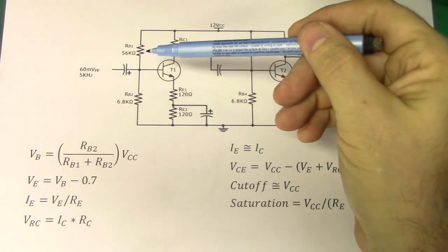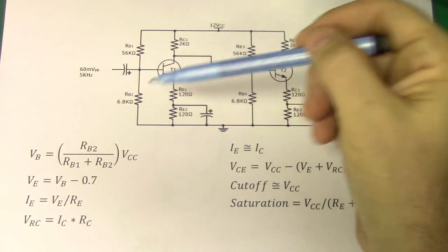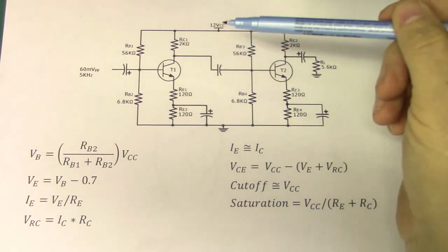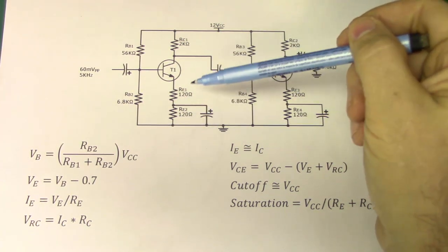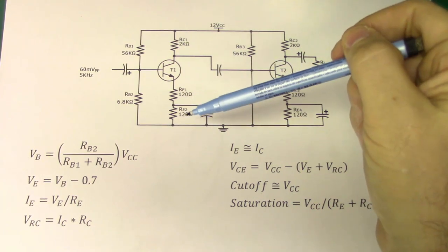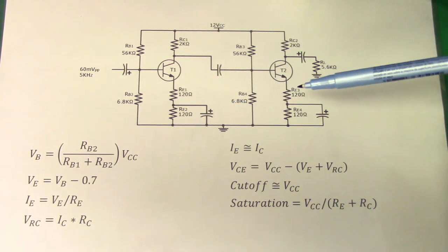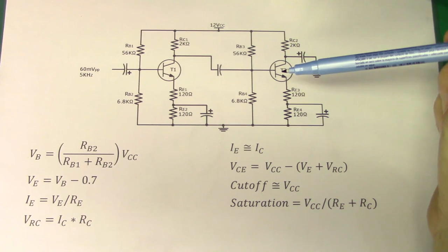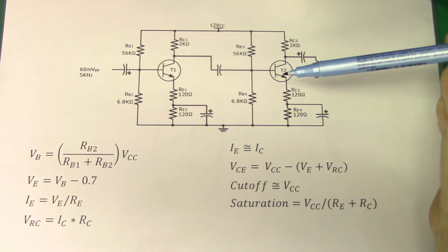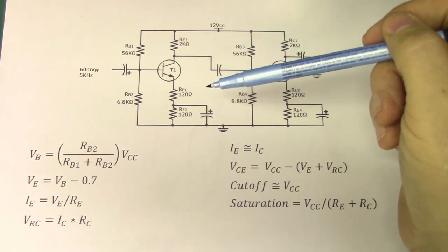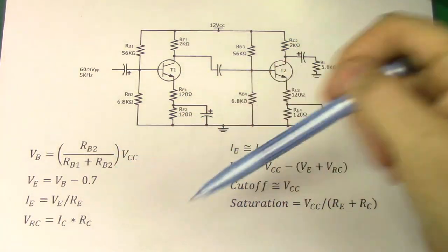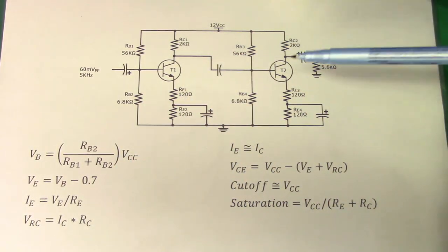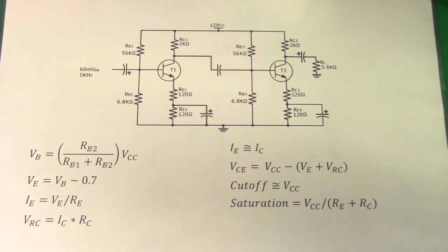You'll see that we have the 56k ohm and the 6.8k ohm resistors, and the same values on the other side, as well as the same values on RC. We have the split emitter resistors RE1, RE2, RE3, and RE4. That means that the DC is going to be the same for both circuits, so whatever we compute for one applies to the other, and we don't have to do the math two times.